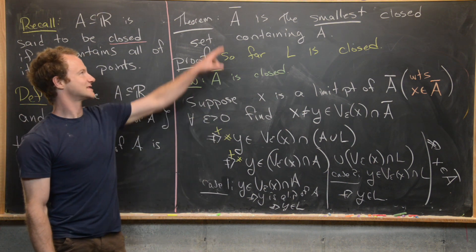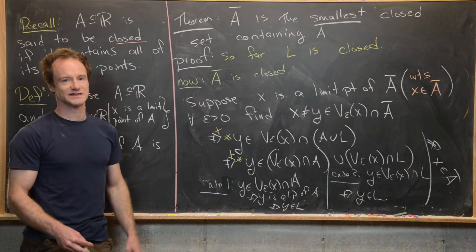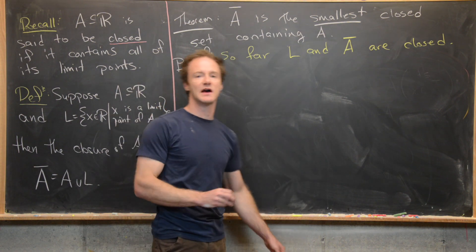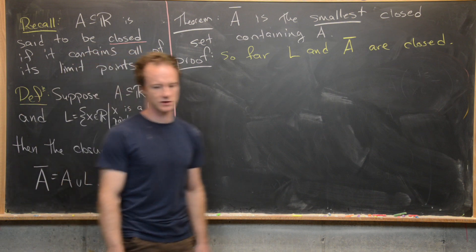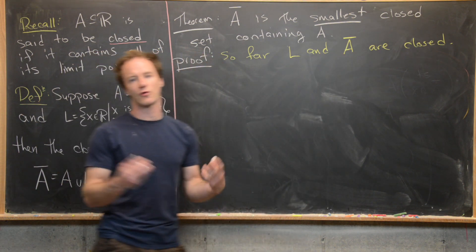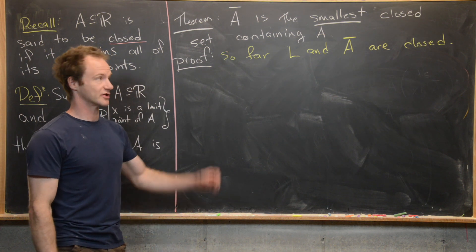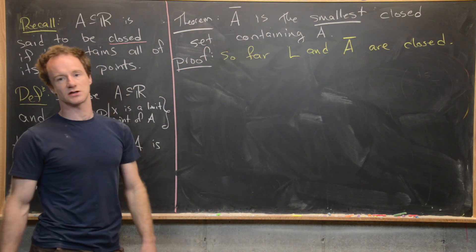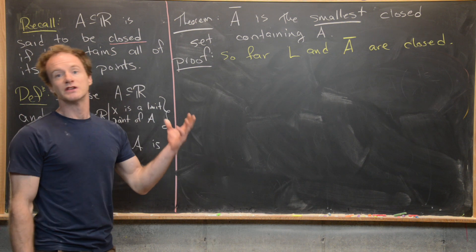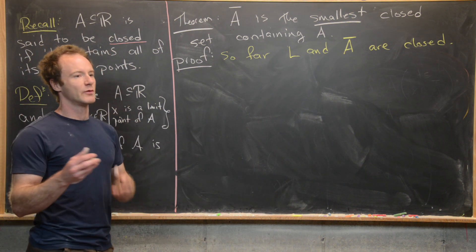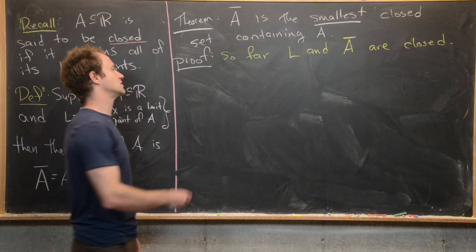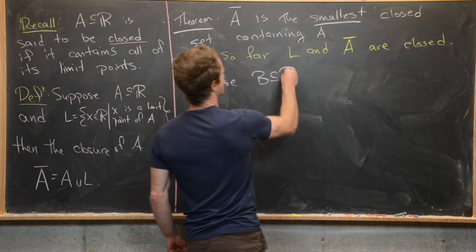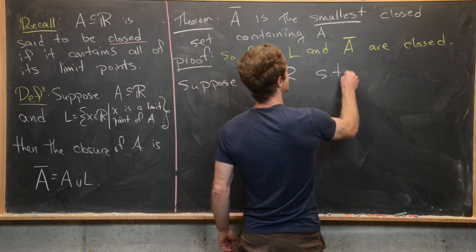All that's left is to show that A-bar is the smallest closed set containing A. We've proven that L is closed and that the closure of A is closed. Now for 'smallest,' our ordering is set inclusion. Suppose B is another subset of real numbers that satisfies two things: B is closed, and A is contained inside of B.